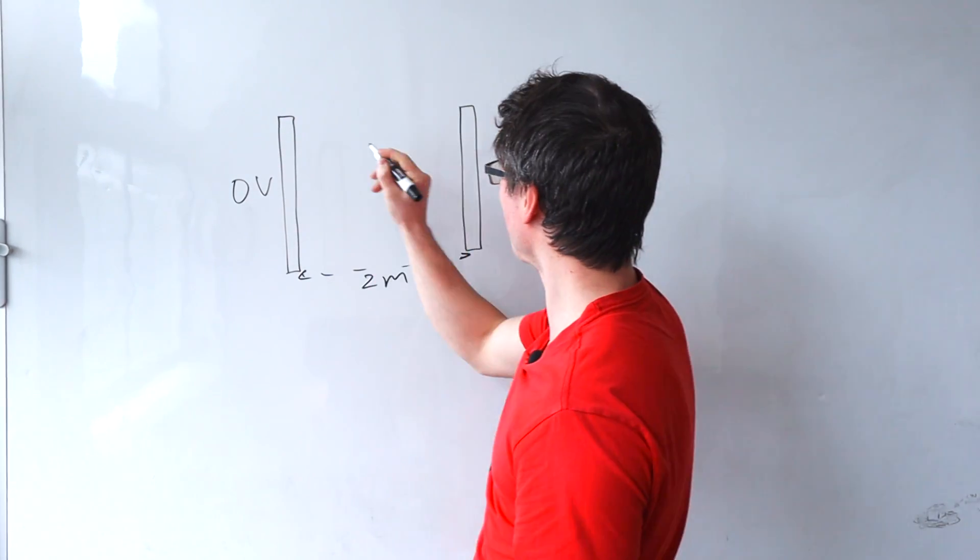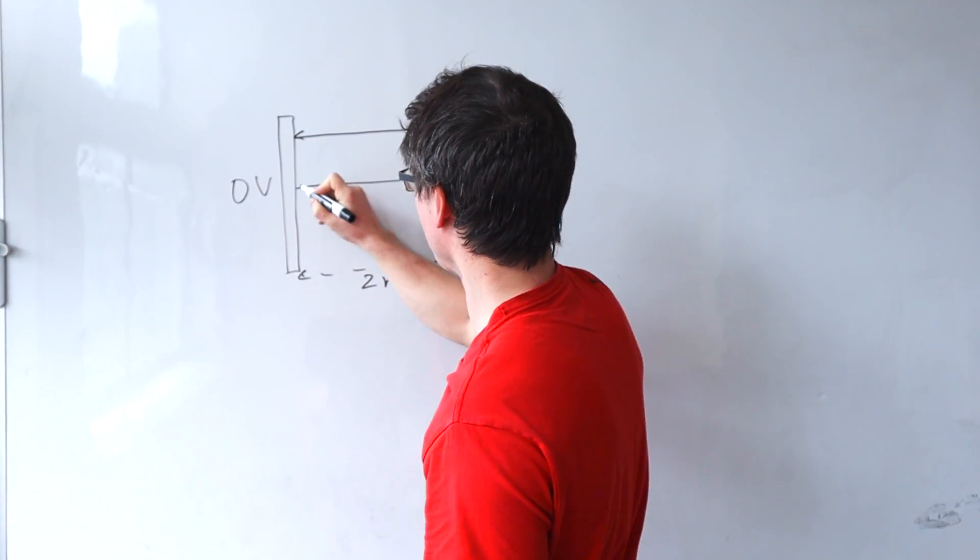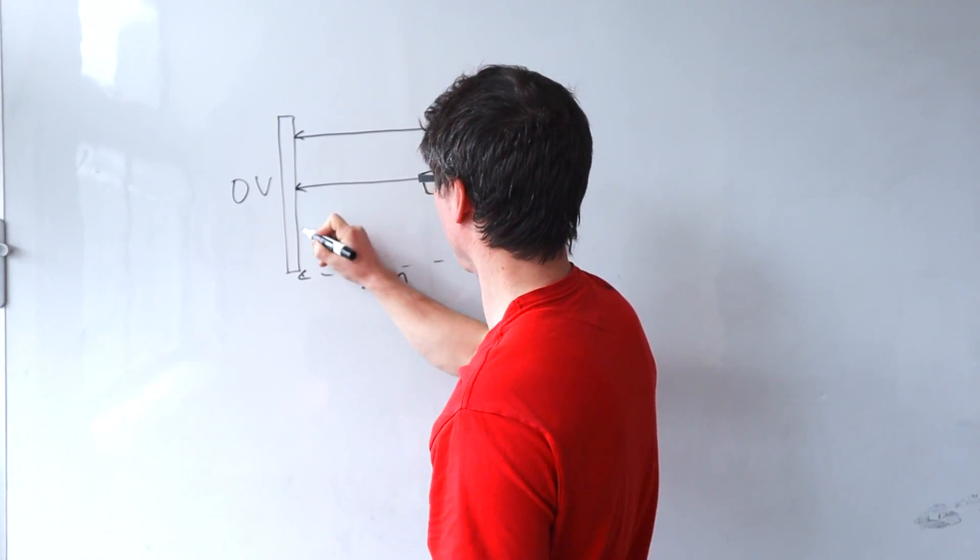Shall we say that the distance between them is let's say two meters. So there's going to be an electric field between the plates which will be uniform and in this direction.